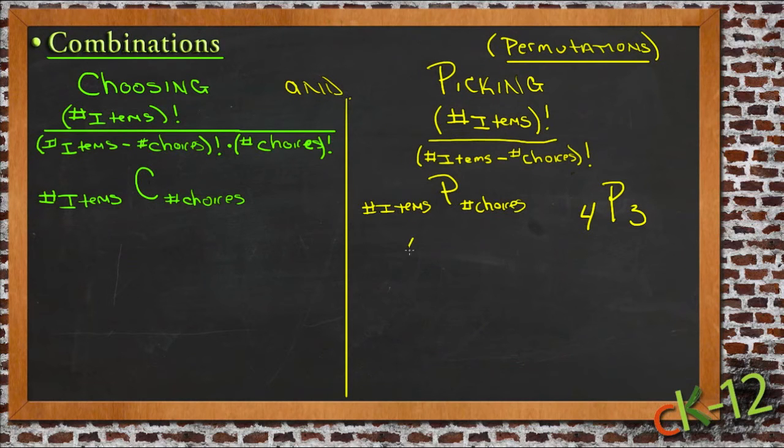We have 4 factorial on top and divide that by 4 minus 3 factorial on the bottom. So 4 factorial is 4 times 3 times 2 times 1, and we divide that by 4 minus 3, which is 1. One factorial is 1.